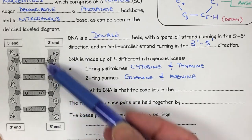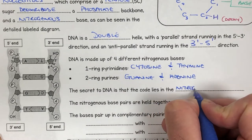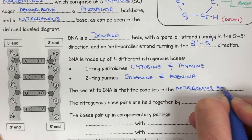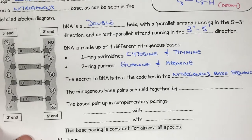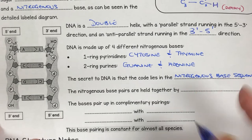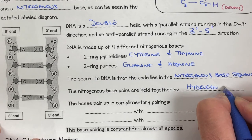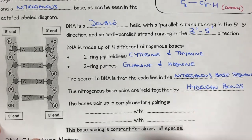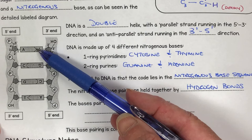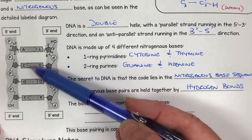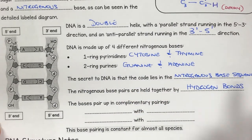The secret of the DNA code lies in the base sequence — the nitrogenous base sequence. The nitrogenous bases are held together by hydrogen bonds. The reason they're held together by hydrogen bonds is because we want to be able to break them apart when we need to do replication or transcription, which we'll talk about later. Basically they can zip together and unzip apart.